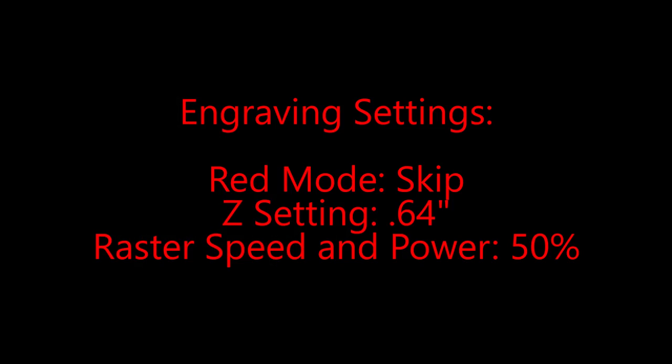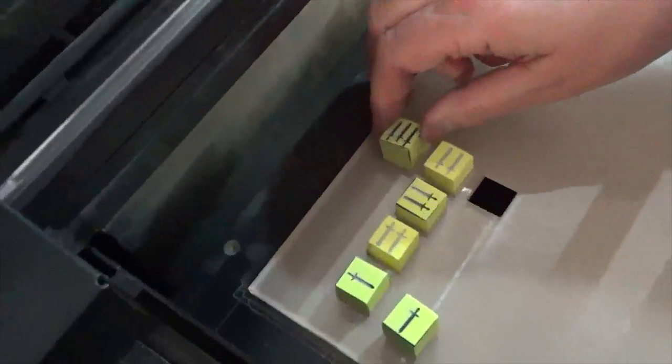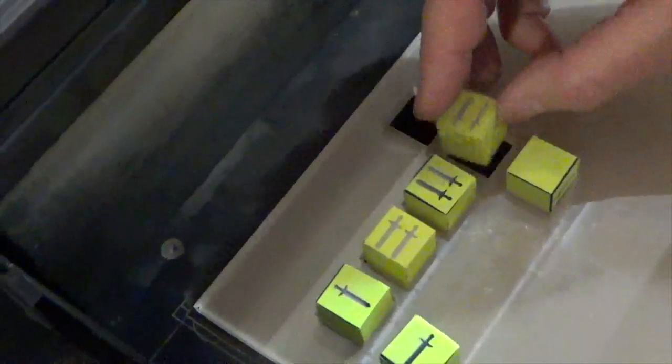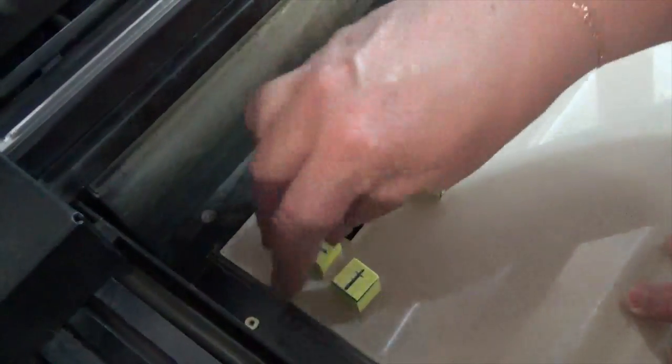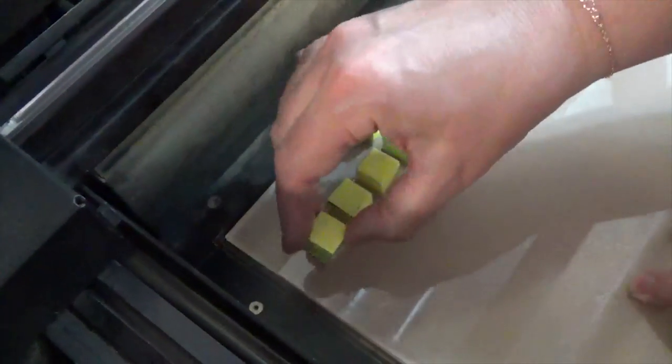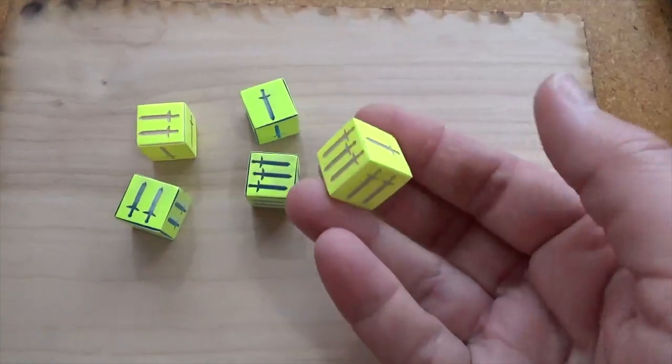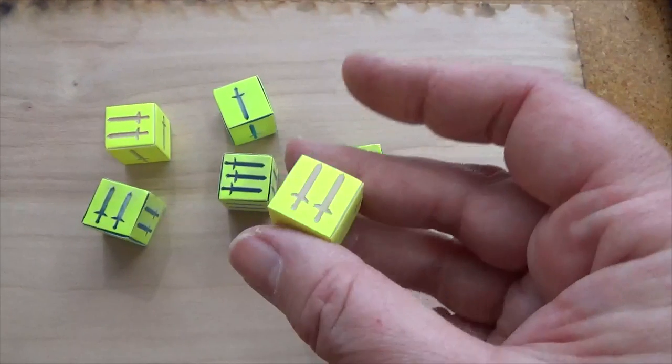Now I have to get the engraving settings right, and I tell it to skip the red. But most important, I raise the height of the laser to .64 inches so it clears the dice. And I always check the speed and power to make sure that it's still set at deep engrave or 50% for each. So here it is engraving, and when it's done, I do my rotation. And I have to be very methodical about this to make sure that everything's on the correct side. I rotate things through, and then I just run it again. And I do this six times in a row, and this is what I get.